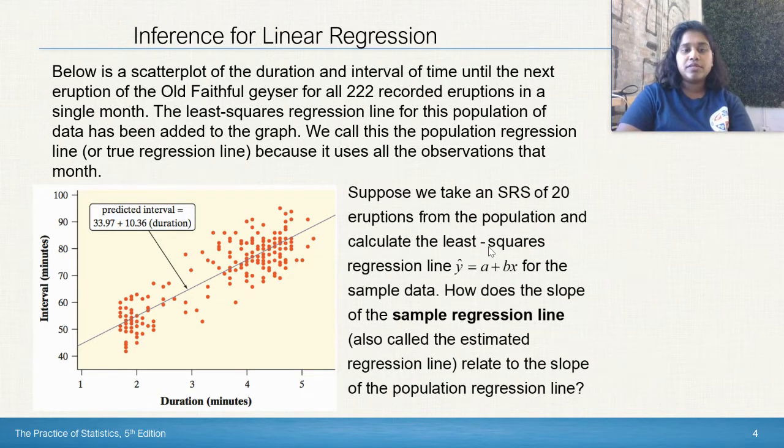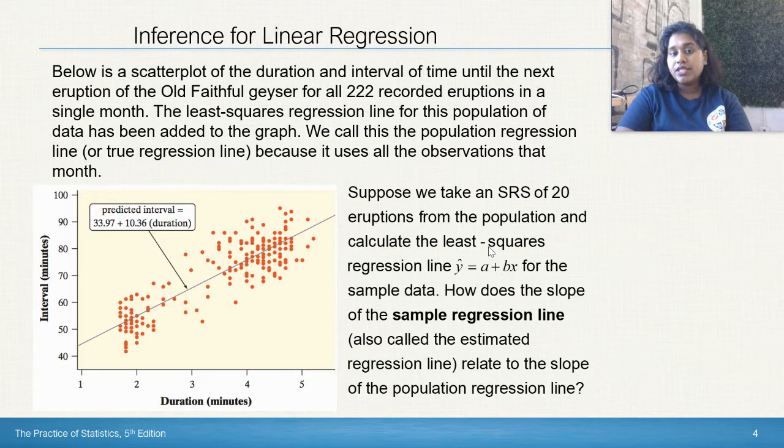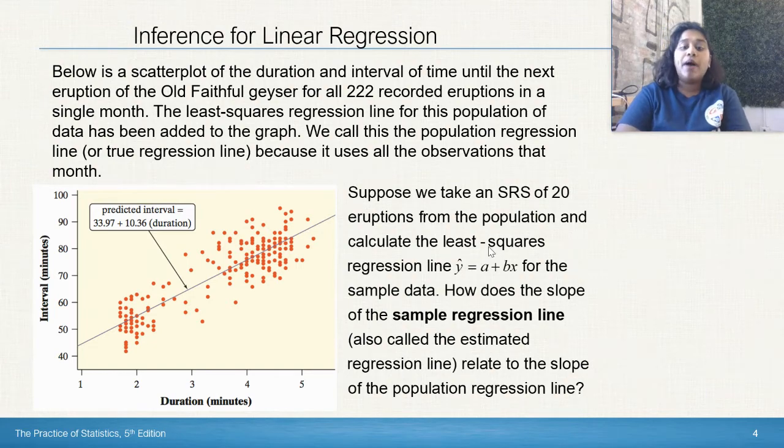Suppose we take a single random sample of 20 eruptions from this population. Calculate the new least squares regression line for the sample data. How would the slope of the sample line relate to the slope of the population line? Good question.